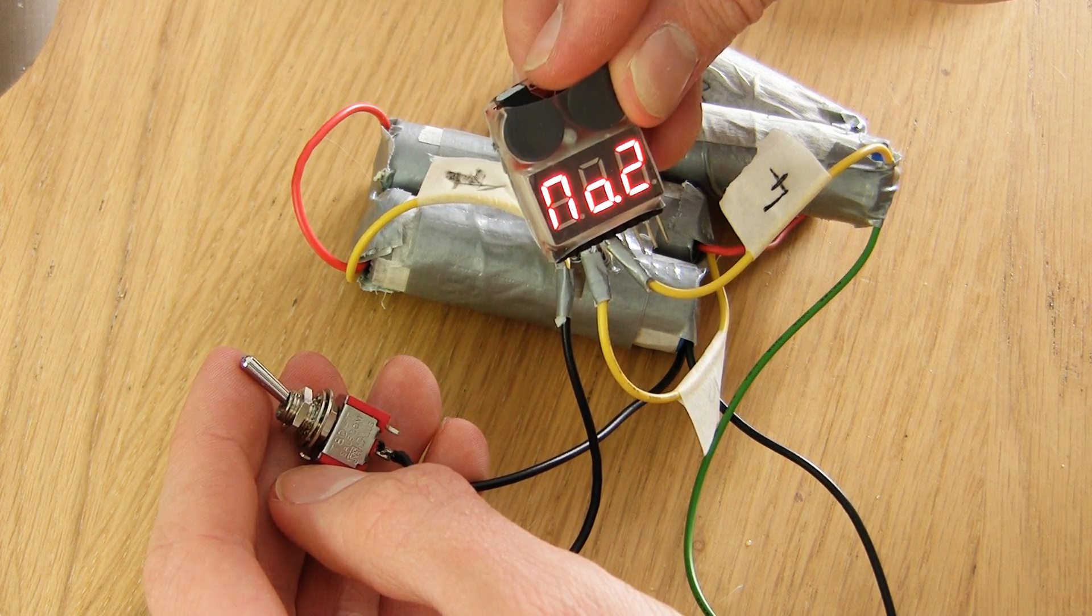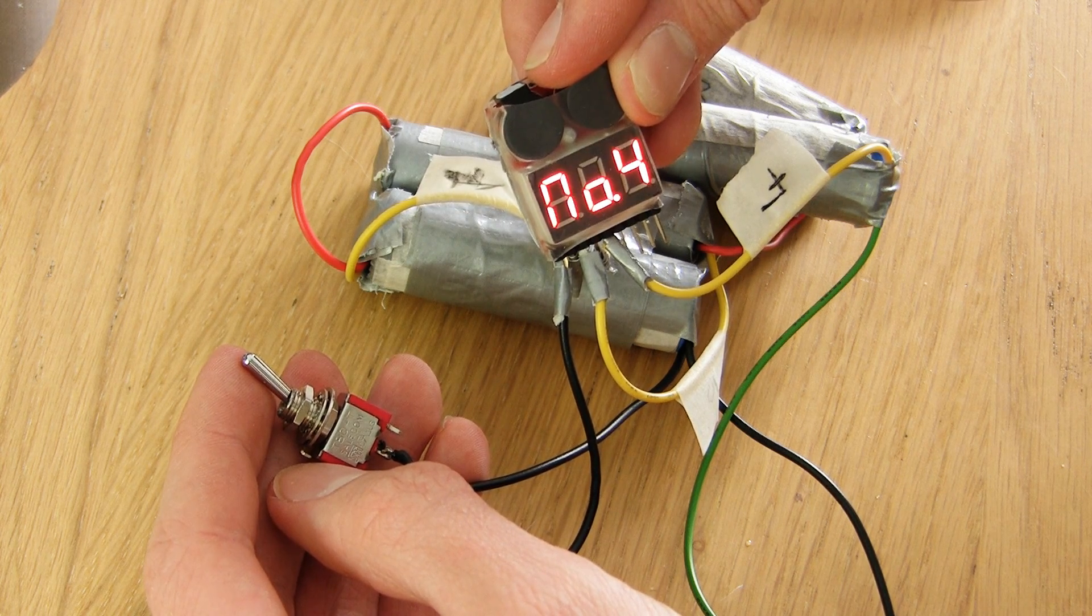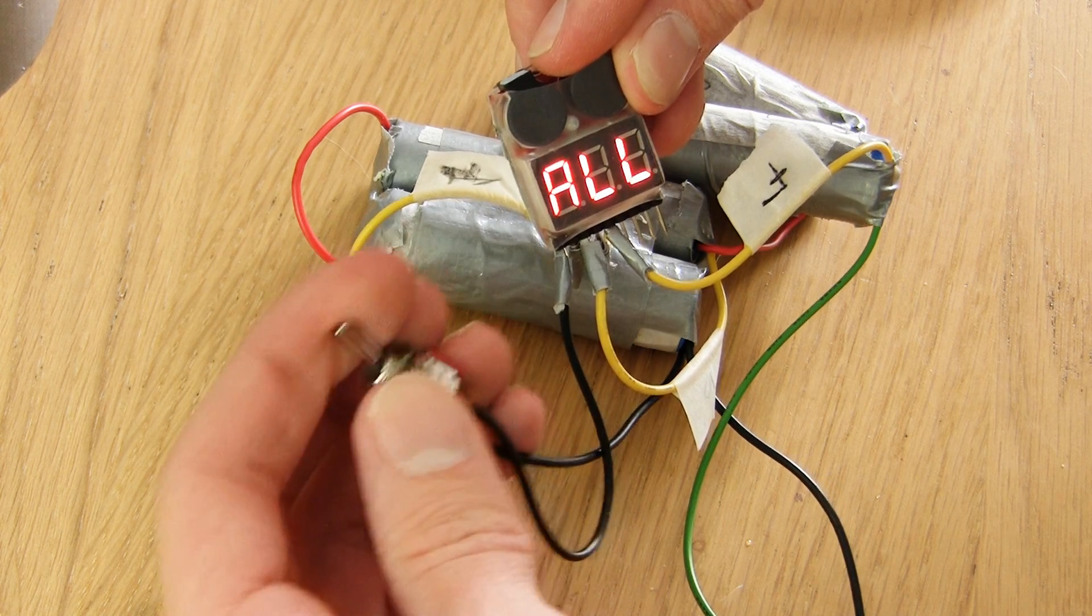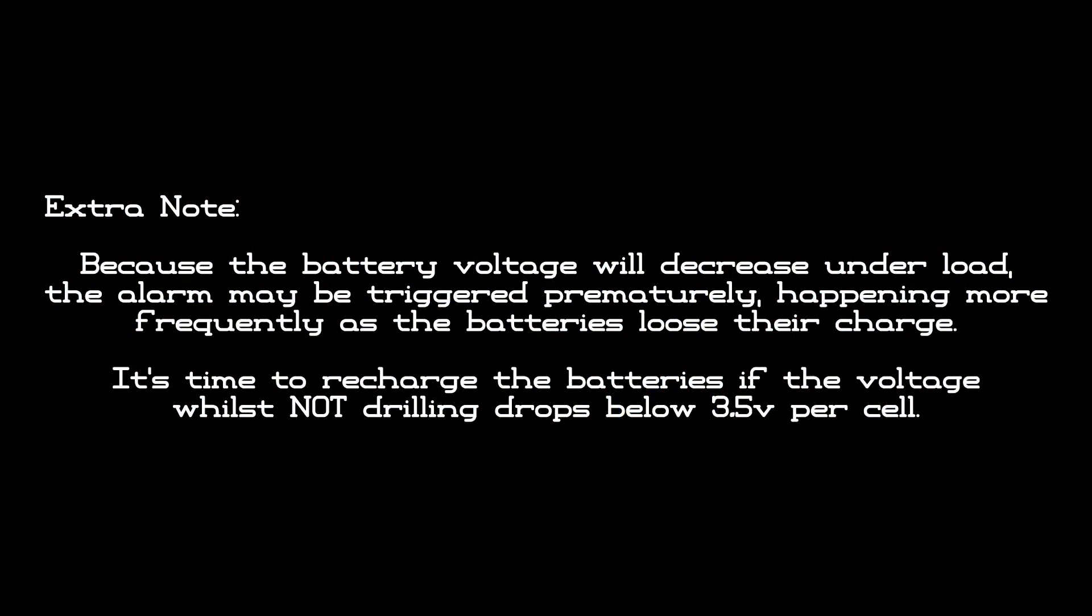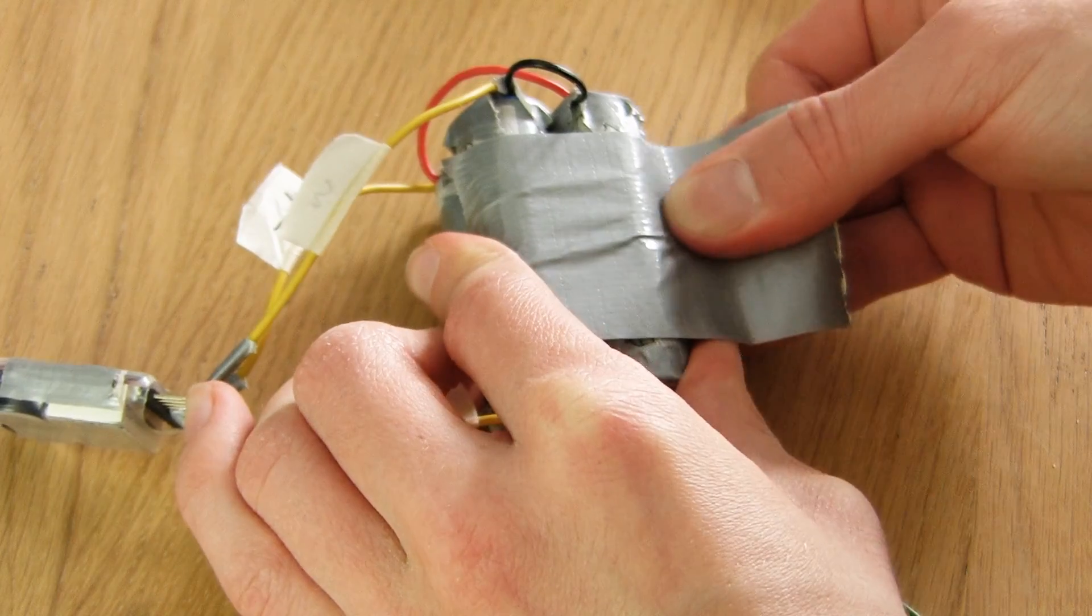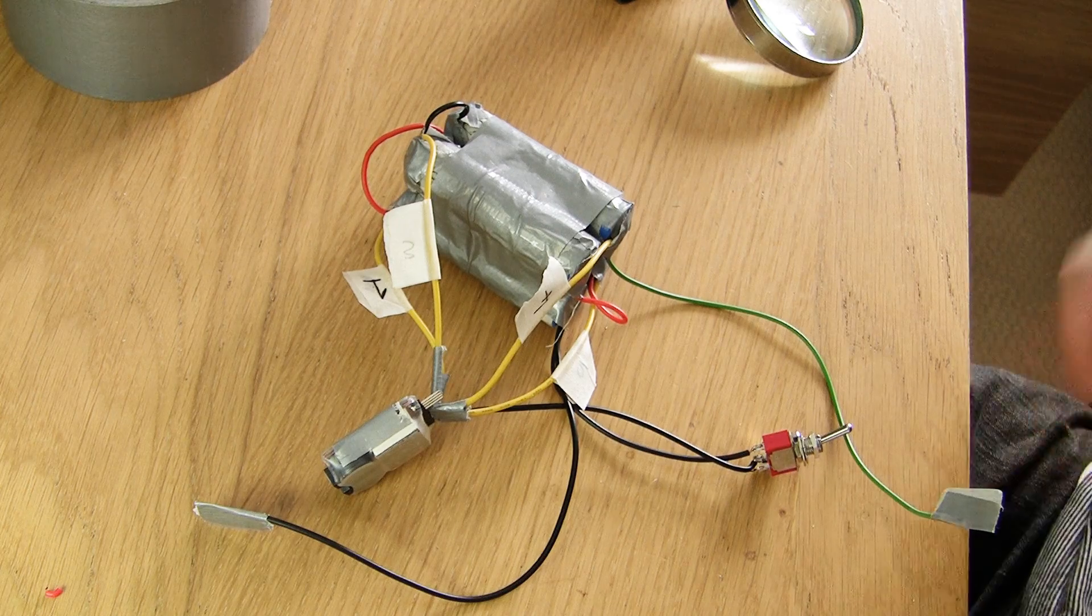Though it's not pictured here there's a tiny button on top which cycles through the trigger voltage for the alarm. Press it to cycle through to 3.10 volts. Whenever the battery dips below this level it will trigger the beeping alerting you that it's time to recharge. Bind the batteries together using duct tape to make it nice and secure and that's the electronics done.